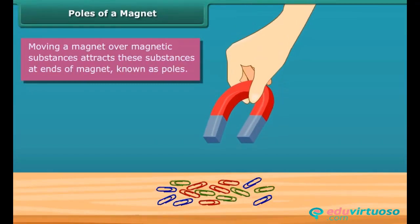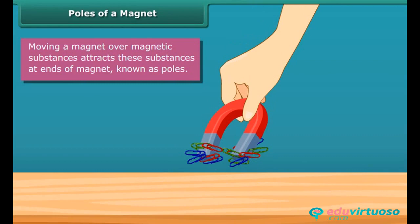When you move a magnet over magnetic substances, you will see that these substances get attracted to particular parts of the magnet only. These are generally the two ends of the magnet. These ends are called poles of the magnet.